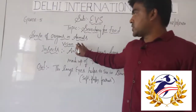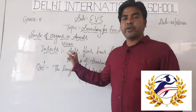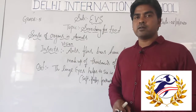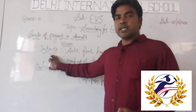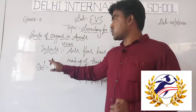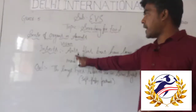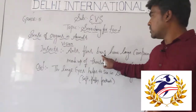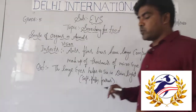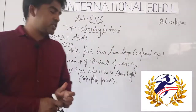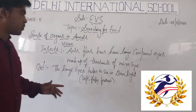Students, in the previous video we talked about the sense of vision with the example of a hawk. Next, some insects also have a very good sense of vision. Insects such as ants, flies, bees, and honeybees all have large compound eyes. So what is the meaning of compound eyes?